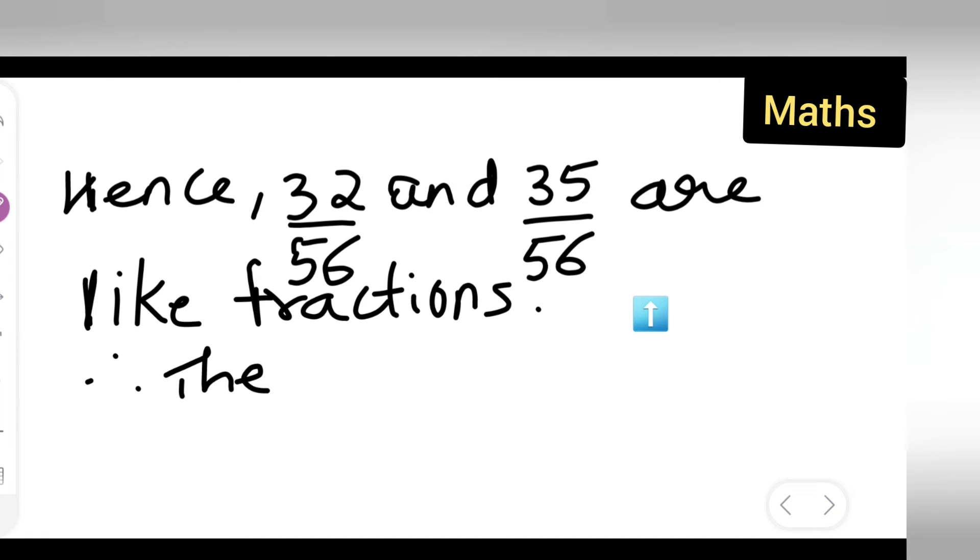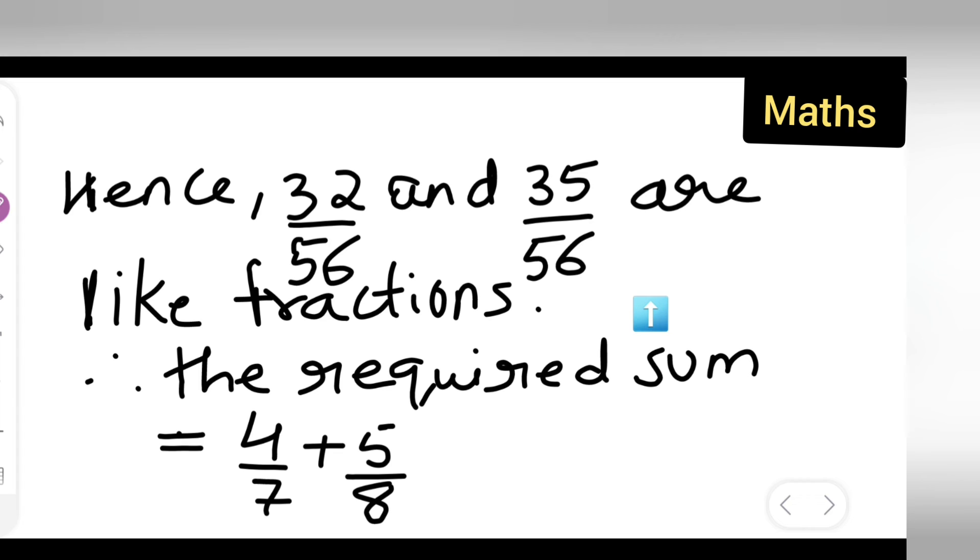the required sum is equal to 4 upon 7 plus 5 upon 8. You will get what? 32 plus 35, separately you write down 56, upon 56. Now, basically, this is equal to what? It is equal to 32 plus 35 upon 56.